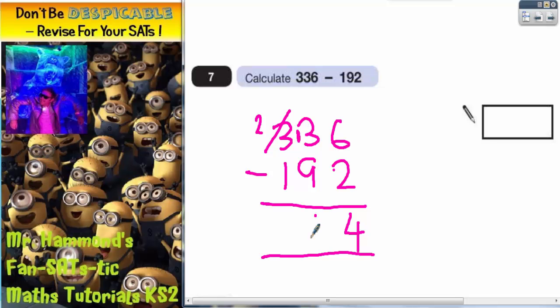13 take away 9 is 4. 2 take away 1 is 1. So the final answer should be 144. I will say that they have given you one where there is some borrowing from the next column.